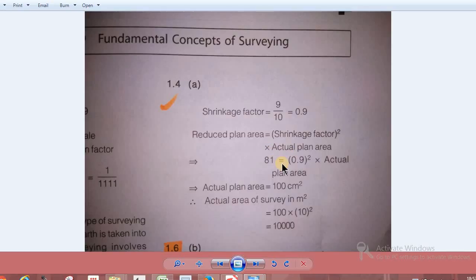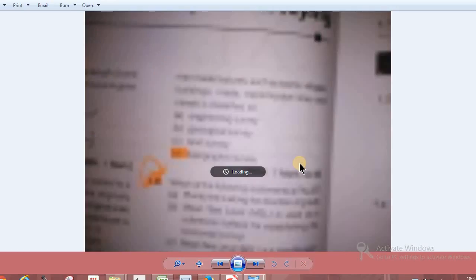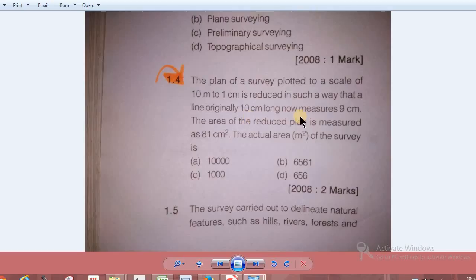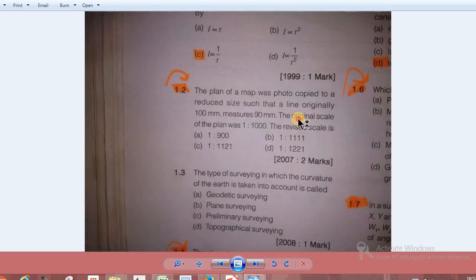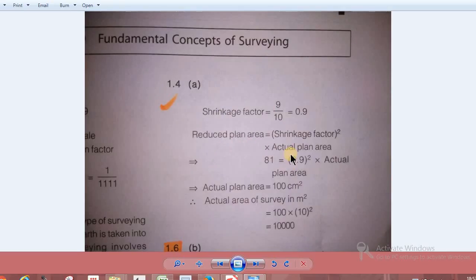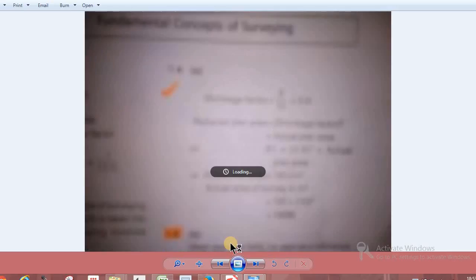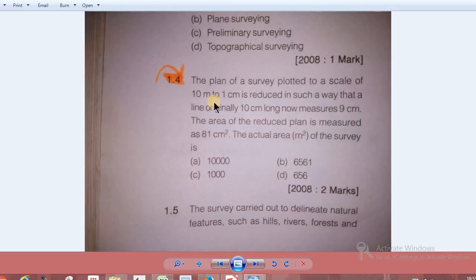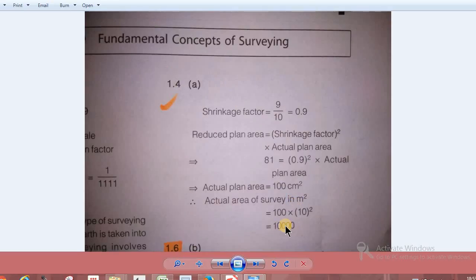This term 81 is equal to 0.9 squared times X. The actual plan area is 100 cm squared. You allocate 1cm equal to 10m, so it's 10 squared, which is 10,000.